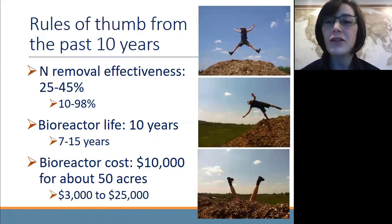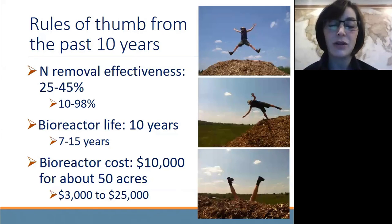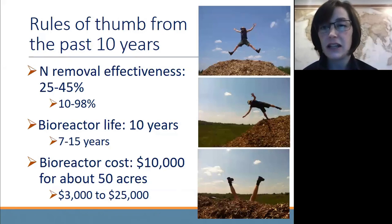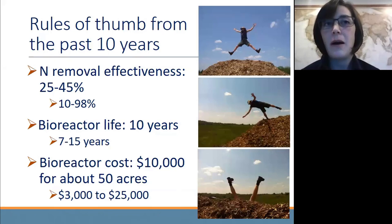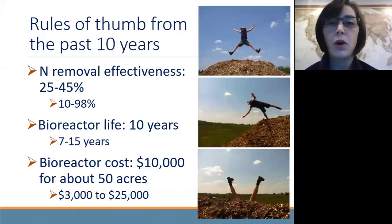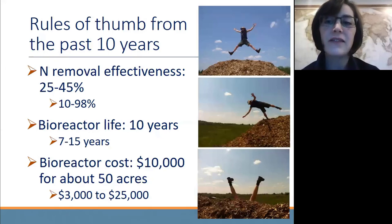The next rule of thumb: how long do these wood chips last before you have to replace them? The rule of thumb is about 10 years, with a range of anywhere from about seven years to 15 years. Interestingly, what we see is that bioreactors at the end of their life don't actually run out of carbon — they have reduced hydraulic capacity. The wood chips have broken down and it's harder to push water through them as designed. So when the wood chips have broken down too much and the bioreactor has slumped, that's when you would want to excavate and fill with new chips.